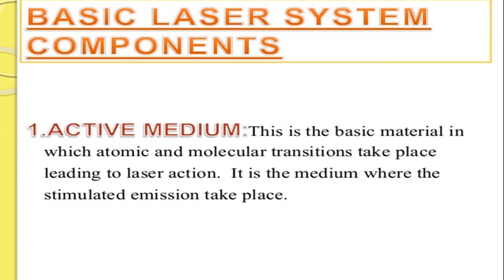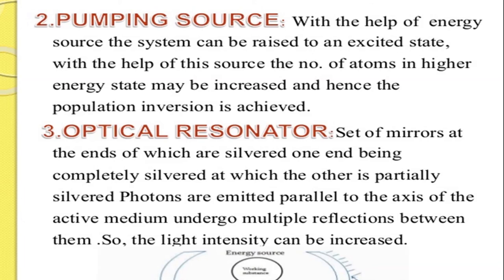The basic laser system components are: first, the active medium — the basic material in which atomic and molecular transitions take place leading to laser action, where stimulated emission occurs. Second, the pumping source — an energy source that raises the system to an excited state, increasing the number of atoms in the higher energy state to achieve population inversion. Third, the optical resonator — a set of mirrors, one end completely silvered and the other partially silvered, between which photons emitted parallel to the axis of the active medium undergo multiple reflections, increasing light intensity.